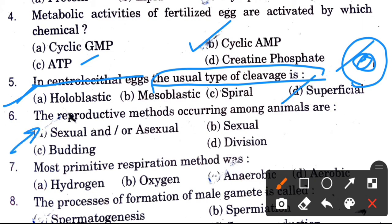Next question: The reproductive methods occurring among animals are? Options are sexual or asexual, sexual budding, and division. The answer is sexual and asexual.